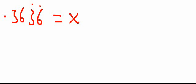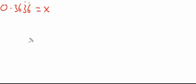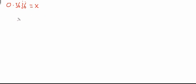Here's the part you have to remember: we look at how many digits are involved in the repeated part of the decimal. Here we have 3636, so there are two digits being repeated. We then multiply this number by 100, because 100 has two zeros — we multiply by a multiple of 10 which has the same number of zeros as repeated digits.